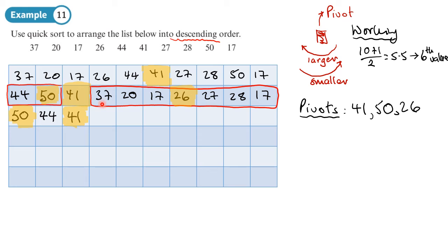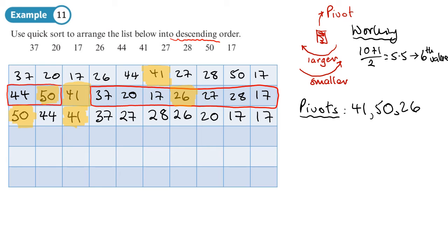For the right sub-list, anything larger than 26 stays on the left — so 37 stays. Larger values 27 and 28 move across to the left of 26. A value already smaller than 26 stays on the right. Then 20 and 17 pivot across to the right of 26. We highlight 26 as our pivot.